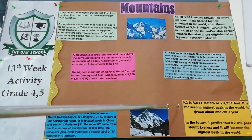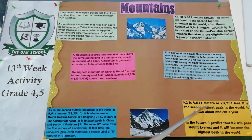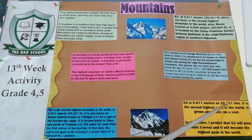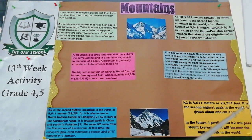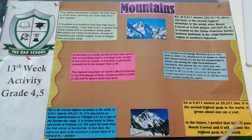K2 is 8,611 meters and 28,255 feet — it is the second highest peak in the world. Its height grows about 1 centimeter per year. The main prediction is that K2 will eventually surpass Mount Everest. In the future, K2 will pass Mount Everest and become the highest peak in the world.